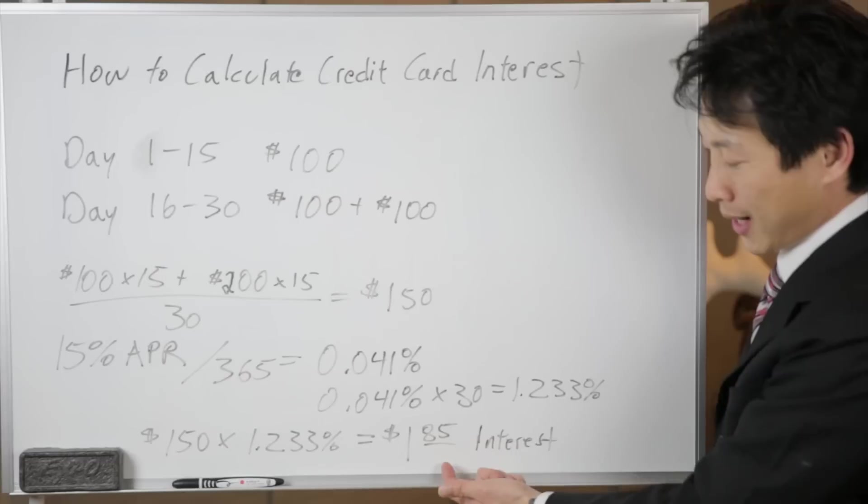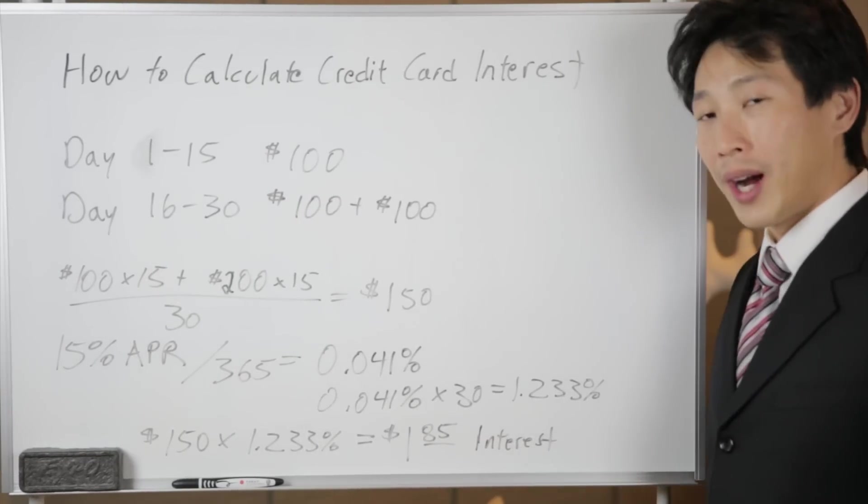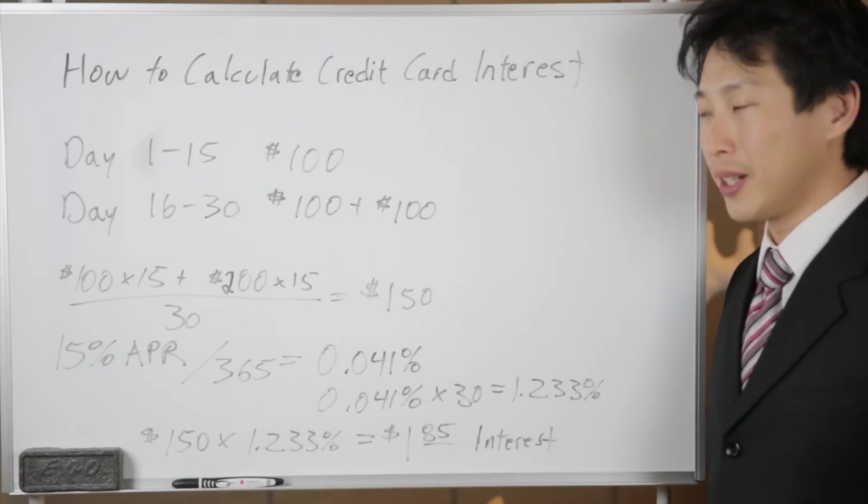So we got to do a little bit of math here, use a calculator. I don't know how to do this in my head, but it ends up to be $1.85 in interest. Why do I even bother with calculating the interest by hand?